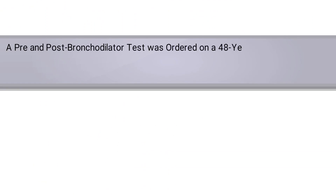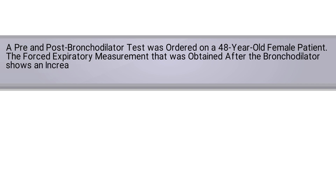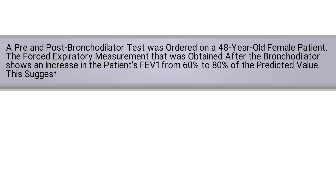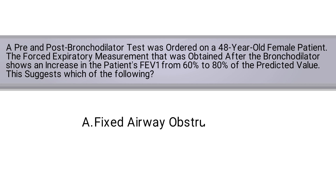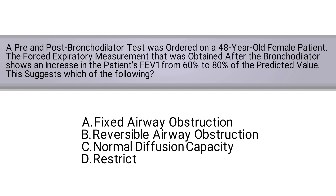A pre and post bronchodilator test was ordered on a 48-year-old female patient. The forced expiratory measurement obtained after the bronchodilator shows an increase in the patient's FEV1 from 60 to 80 percent of the predicted value. This suggests which of the following: A) a fixed airway obstruction, B) reversible airway obstruction, C) normal diffusion capacity, or D) a restrictive process.